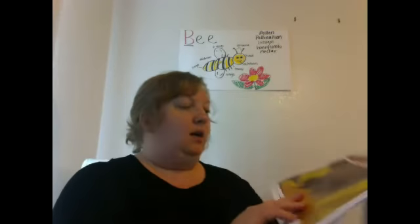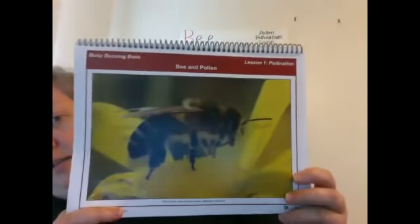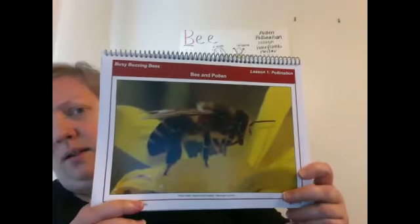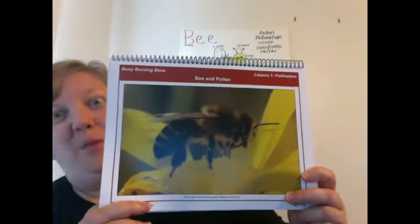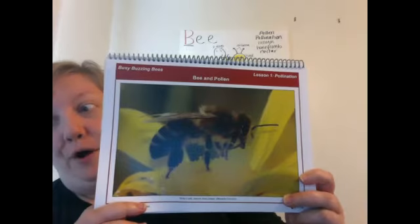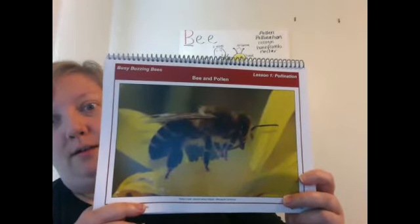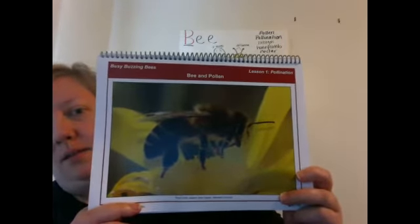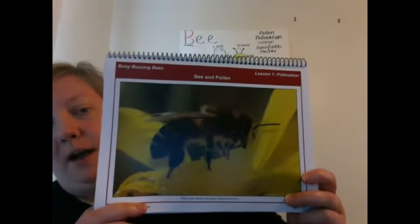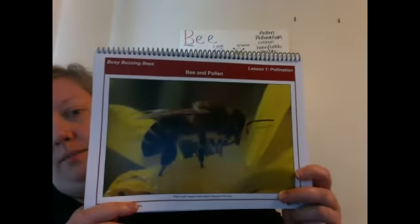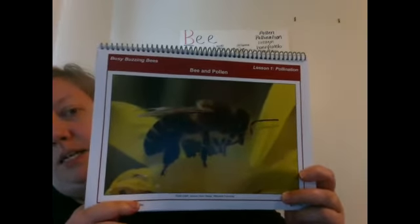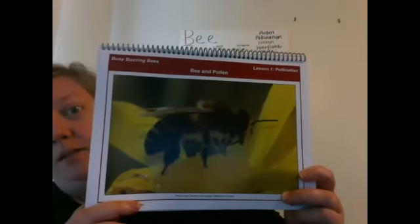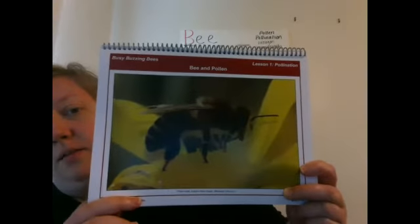And here is a picture of a bee collecting some pollen. Has anybody seen some of that yellow powdery stuff on their car or out on the ground? That's all pollen, and bees go from flower to flower to flower collecting nectar. But they get pollen stuck on their bodies. This process is called pollination.